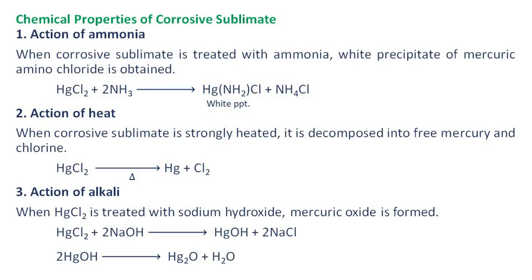Chemical properties of corrosive sublimate. Action of ammonia: When corrosive sublimate is treated with ammonia, a white precipitate of mercuric amino chloride is obtained. Action of heat: When corrosive sublimate is strongly heated, it is decomposed into free mercury and chlorine.